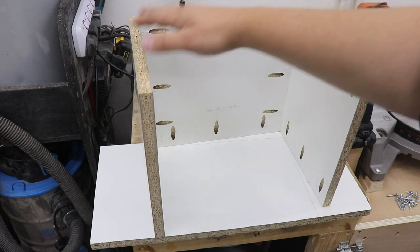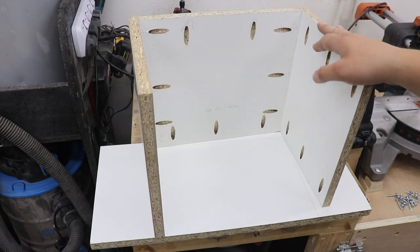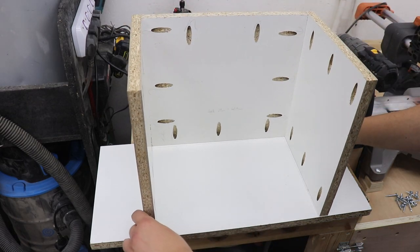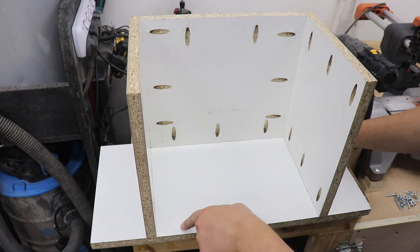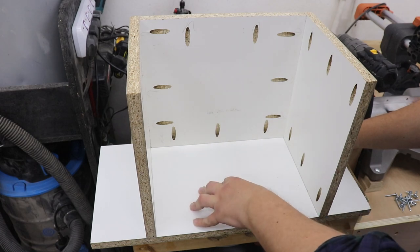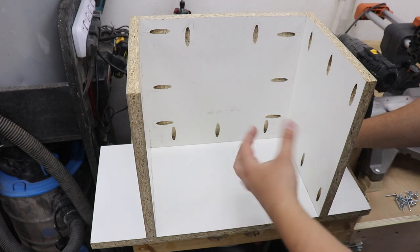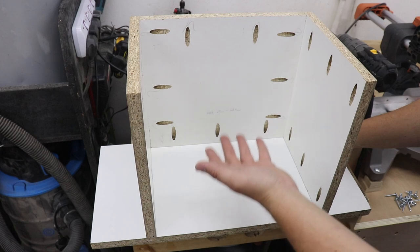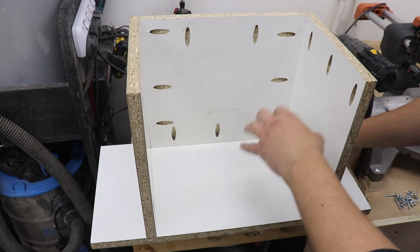We've got the sides and the back together. This is the base and what I want to do is cut out some of that space. It will take a little bit of weight from the whole thing and we're going to have better access to the router from the bottom and clean up the dust and everything else.